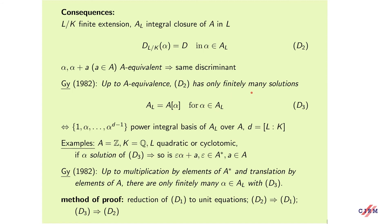Consider now equation D3: A_L = A[alpha], where the unknown belongs to A_L. This is equivalent to the fact that 1, alpha,...,alpha^(n-1) form a power integral basis of A_L over A. If alpha is a solution of this equation, then so is epsilon*alpha + a, where epsilon is a unit in A and a is an element of A. From the theorem concerning polynomials, it follows that up to multiplication by elements of A* and translation by elements of A, there are only finitely many alpha with this property, that is, finitely many power integral bases. The method of proof is: first reduce D1 to unit equations, then D2 to D1, and finally D3 to D2.